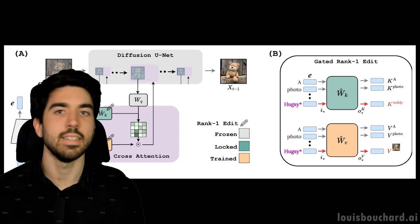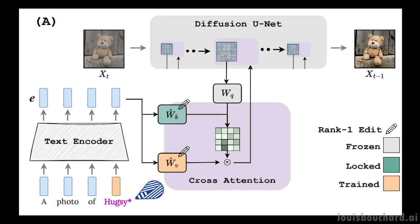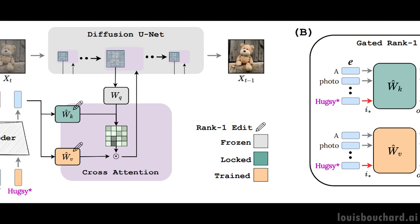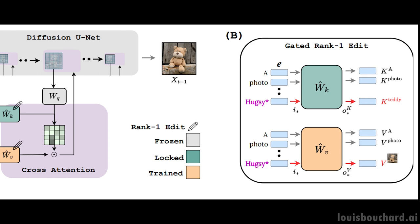As we always see in the current text-to-image models based on diffusion, there is always a text prompt that is encoded to extract relevant information. Then this information is added one way or another, usually through the cross-attention mechanism, to our image generation process, which is an iterative process as explained in my diffusion video. It's in this space with the cross-attention step that they worked. This rank-1 edit, or gated rank-1 edit, will help the model understand where the objects are located in the final image as well as control what appears in it. So we have two objectives: the where and the what, respectively represented by K and V.